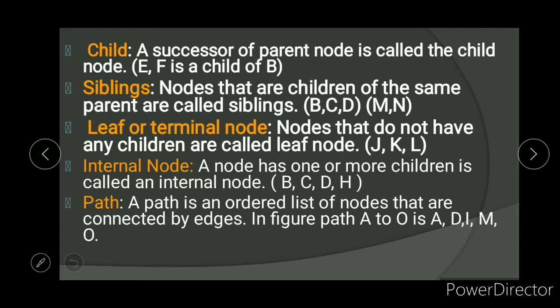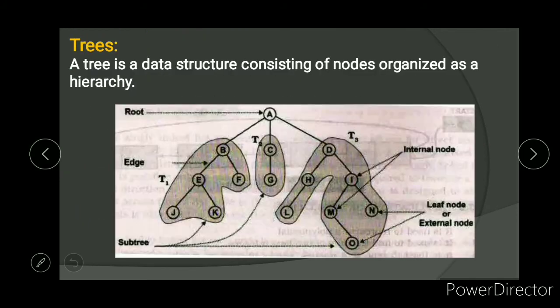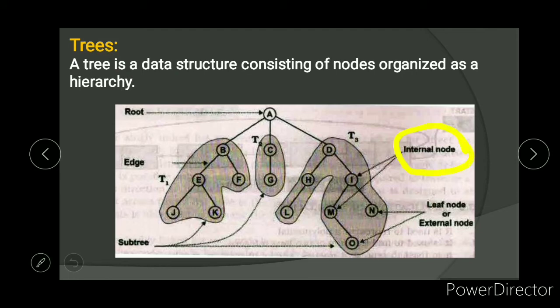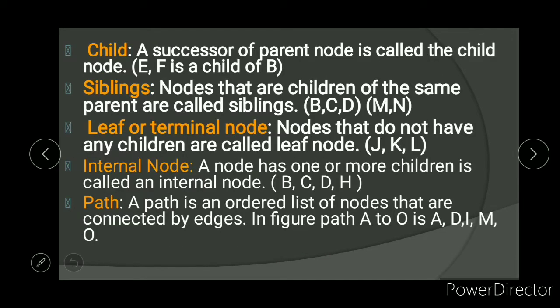A leaf or terminal node is a node that does not have any children. For example, J, K, and L are leaf nodes because they do not have any child nodes, so we call them external nodes or leaf nodes. An internal node is a node that has one or more children. For example, node I has two children and node M has one child, so these are internal nodes.